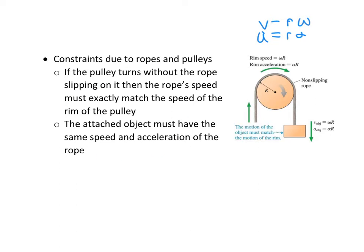If a pulley turns without the rope slipping on it, then the rope speed will match the speed of the rim of the pulley. Because the object attached to the rope is attached to it, it will also have the same speed and acceleration. Let's do an example seeing how all of this works. I'm only going to do the one example because it is a little bit of a longer one.